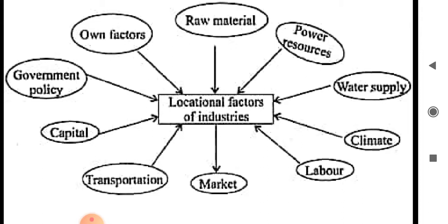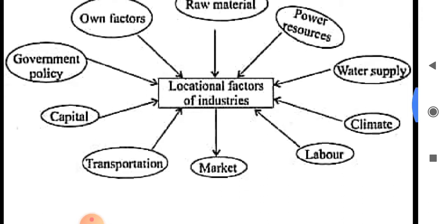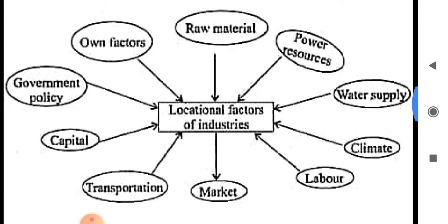Bihar, West Bengal, and Odisha. Next: availability of transport. Jamshedpur is well connected to Kolkata and all the airports by railways and modern highways.